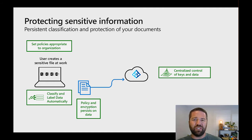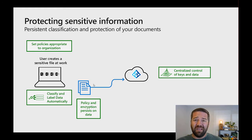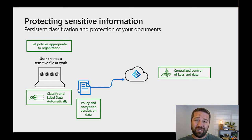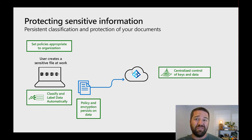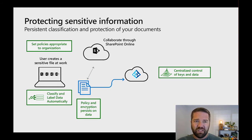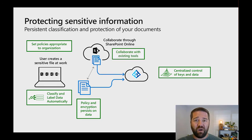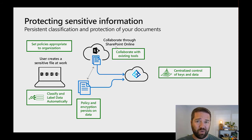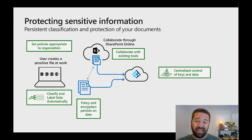If an end user leaves your organization and you revoke their rights, they won't be able to open those files going forward. Maybe they took a bunch of stuff and put it on a USB as they were leaving — if the encryption is included on those documents, it doesn't matter that they took it on a USB because it's encrypted and they have to check access rights before they can open those files. Co-collaboration is built into this. So if you're storing in SharePoint Online, multiple users can open that encrypted document and co-edit it at the same time, which used to not always be the case.